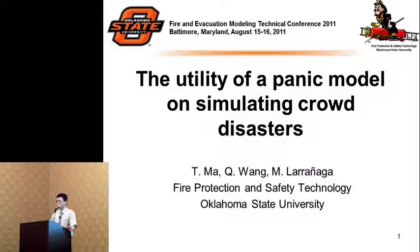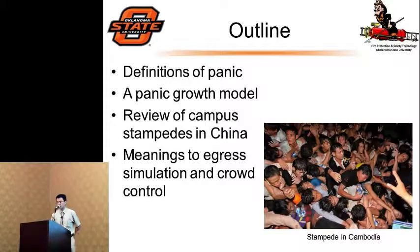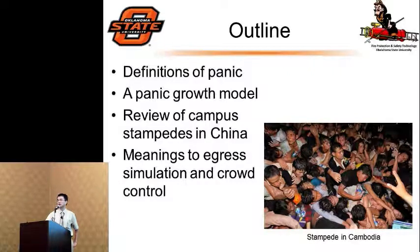Today's topic is a panic model. This panic model involves a lot of debate because you can find many definitions of panic in the literature. Here we will try to use a new definition and tailor it as a criteria to switch between normal behavior and emergency behavior. This emergent behavior may cause crowd disasters. We will review some definitions, the panic growth model, and then 49 campus stampedes in China, followed by how to use this model in crowd simulation and control.